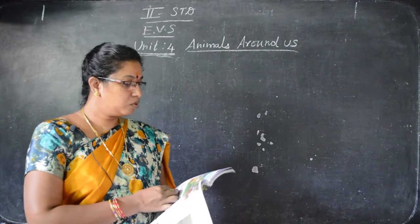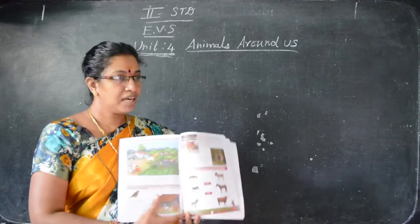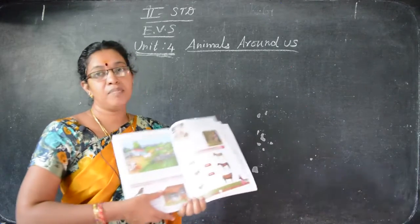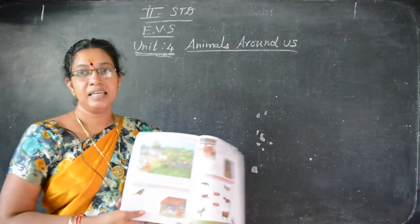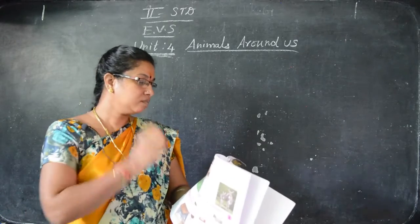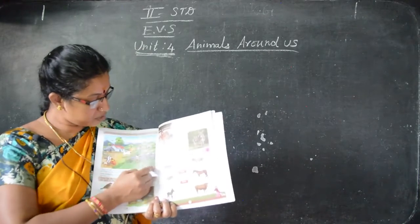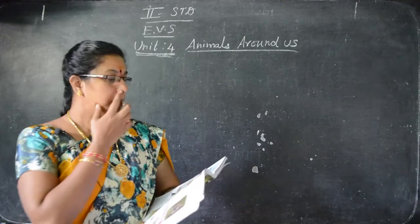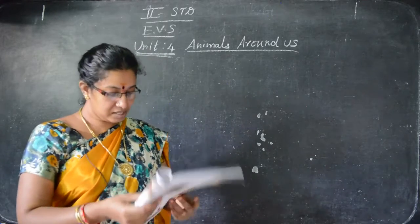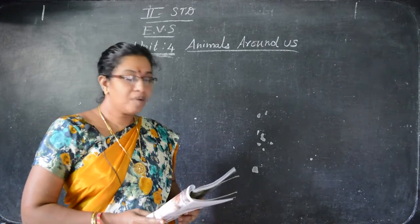Observe the farmhouse — the farmer's house. What animals do you see? Take page number 110 and observe the farmer's house. In Tamil, farmer means 'vivasai.' Look carefully and tell me what animals you can see.